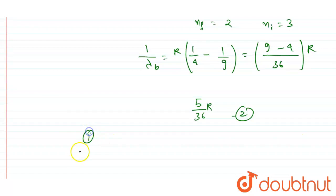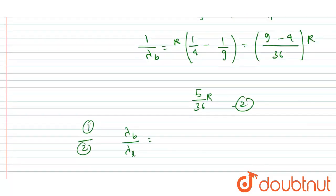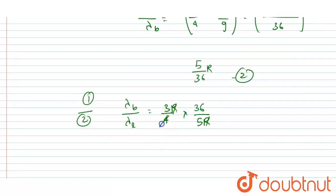I will write equation 1 by equation 2, so λ_b/λ_L. If I put the values from equation 1, 3/4 R, and equation 2, 36/5 R, this will get cancelled out. This 4 will also get cancelled by 9, and you will get λ_b equals 27/5 times λ_L.